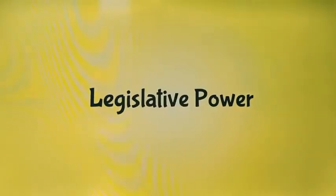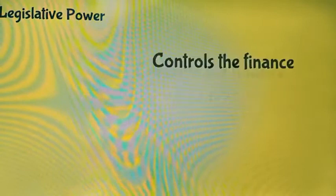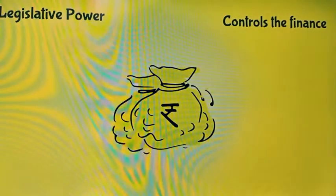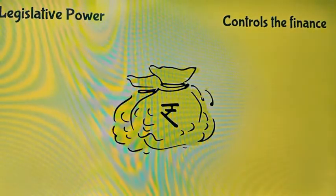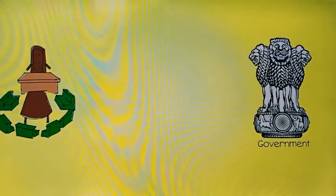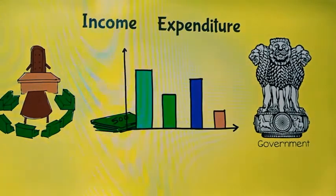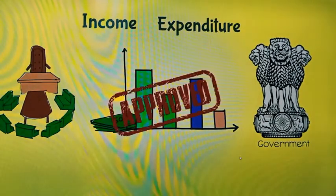Apart from legislative powers, the Lok Sabha controls the finance of the country. A money bill has to be introduced in Lok Sabha. The government prepares the budget of income and expenditure, which has to be approved by the Lok Sabha.